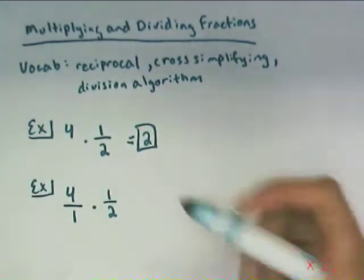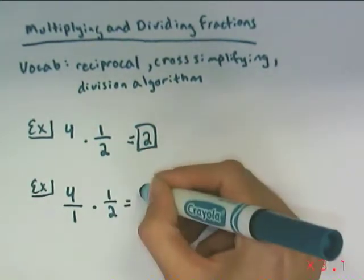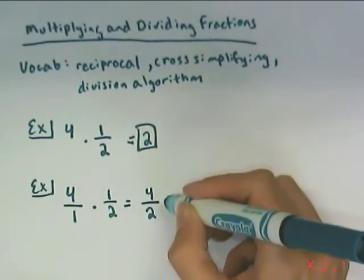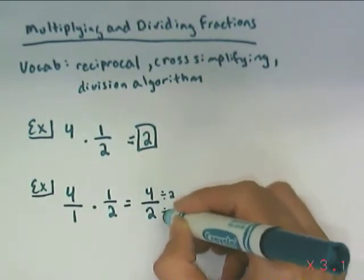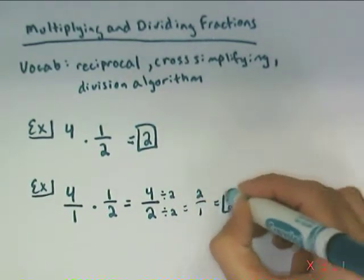And now that we have numerators and denominators, when I multiply fractions, I can go ahead and just multiply across the tops and across the bottoms. And as always, I make sure that my final answer is relatively prime. We can say 2 over 1, or we can say 2.